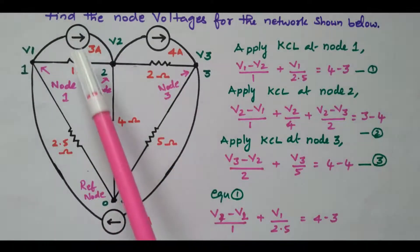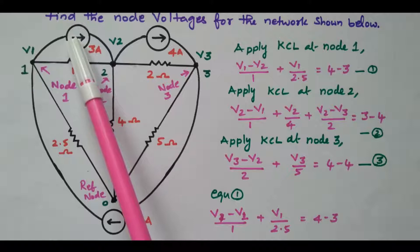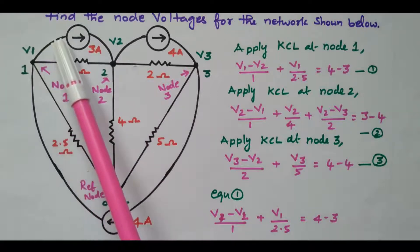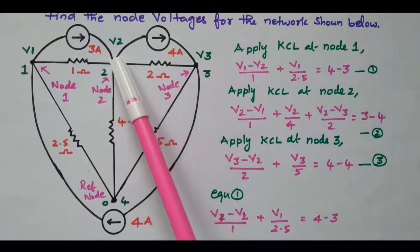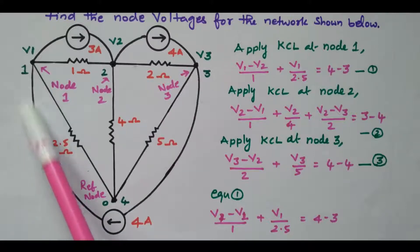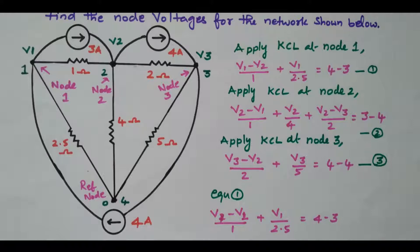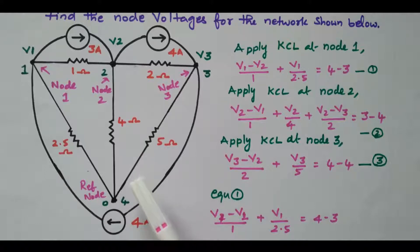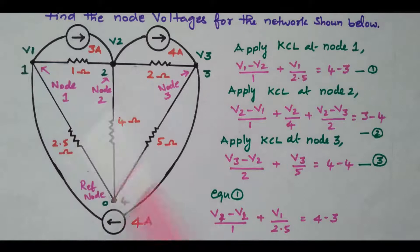The current sources are available — note the current direction. One is going in the right-hand side, meaning it is going towards node 2 and away from node 1. Similarly, this current source is going away from the second node and towards the third node. Another is going towards the first node and away from the third node. So the current direction is important. To find V1, V2, V3, we apply Kirchhoff's current law to nodes 1, 2, and 3, frame three equations, and solve them.